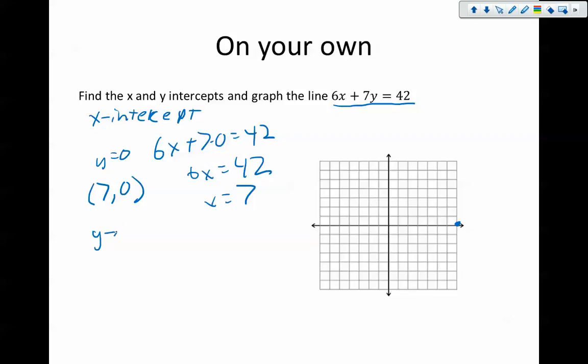Then we find our y-intercept, which is when we plug in 0 for x. This is 6 times 0 plus 7y equals 42. 7y equals 42, so y equals 6. So there's my second point, 0, 6.